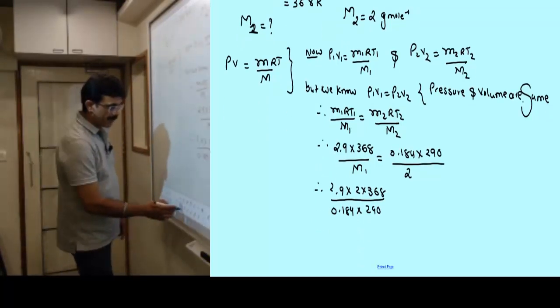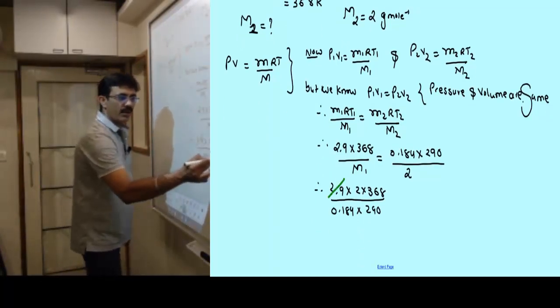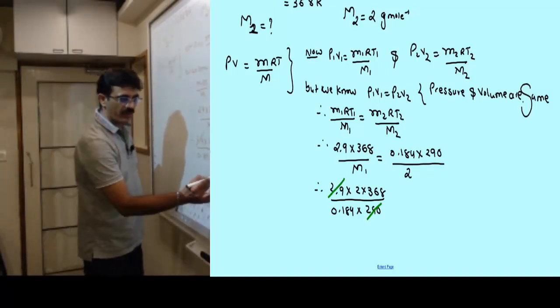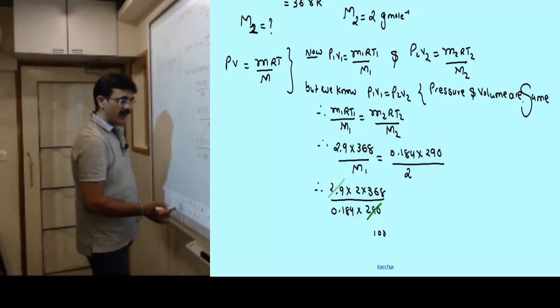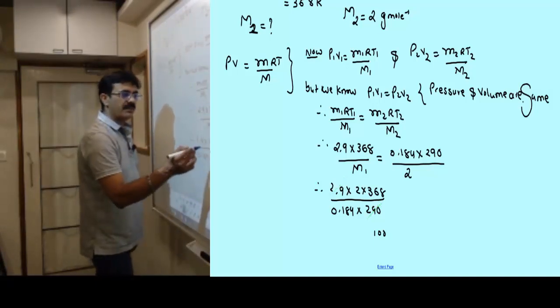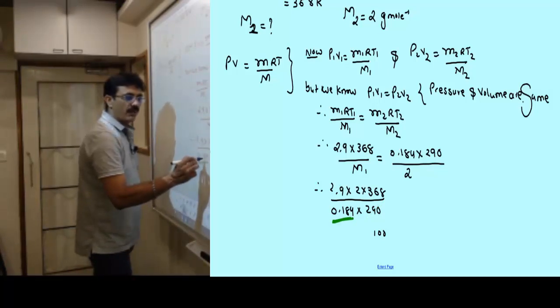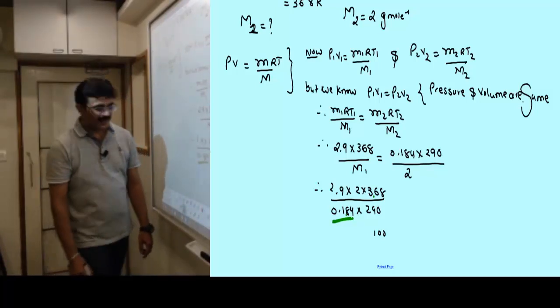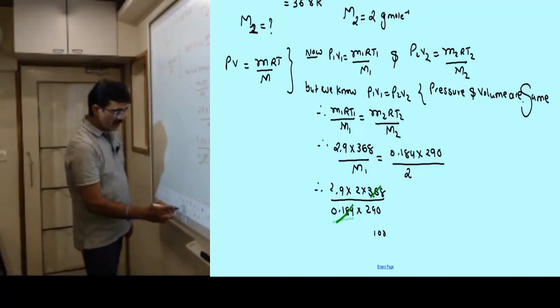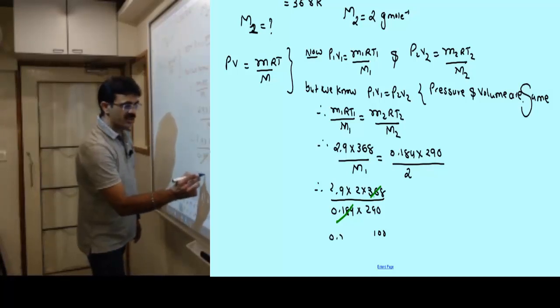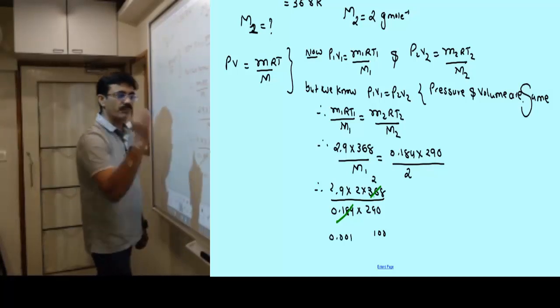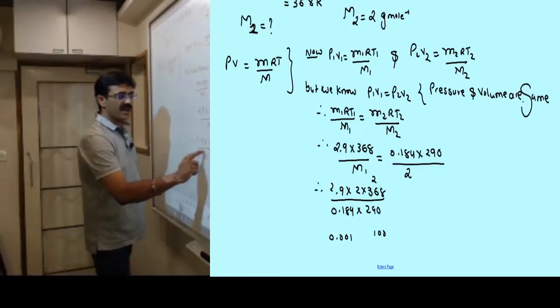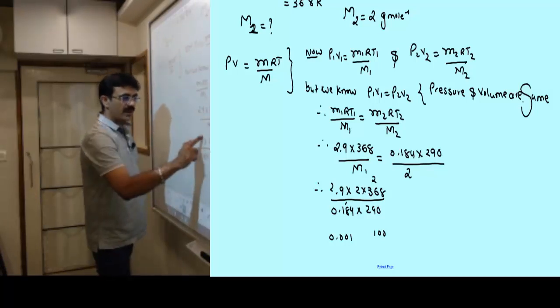We will bring capital M1 to the other side. So M1 equals 2.9 into 2 into 368 divided by 0.184 into 290. If you look carefully, 2.9 and 290 cancel to give 100. Similarly, 0.184 and 368: 184 times 2 is 368, so these cancel to give 0.001 and 2 on top.